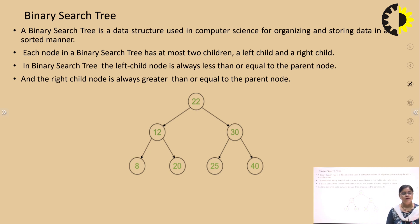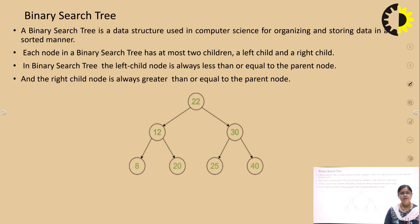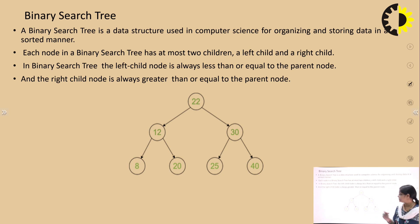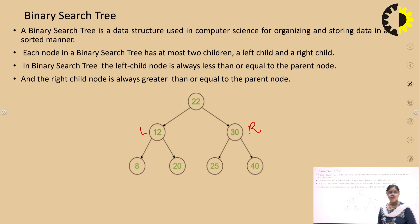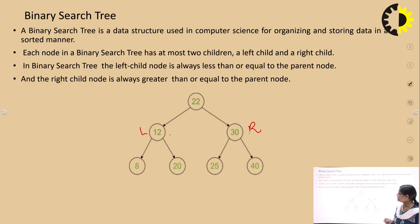A binary search tree is a data structure used in computer science for storing and organizing data in a sorted manner. As we see in the pictorial diagram, each node of the binary search tree has at most two children — a left node and a right node. In a binary search tree, the left child is always less than or equal to the parent.